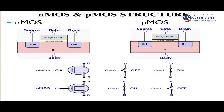In the PMOS structure, there is an N-type substrate into which P-plus diffusions are made to form the source and drain terminals. Silicon dioxide serves as the insulating layer, over which the polysilicon gate terminal is placed. MOS transistors have three terminals — source, drain, and gate — and the bulk is also considered a terminal, giving four terminals in total.